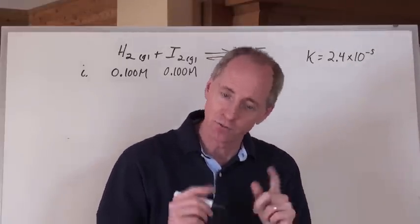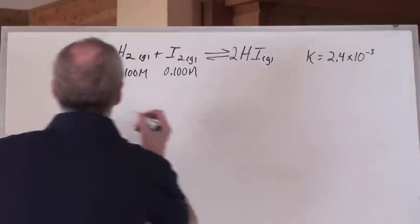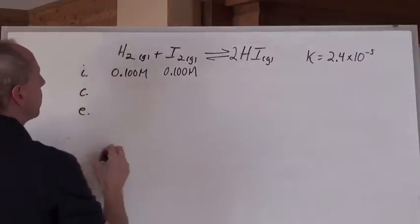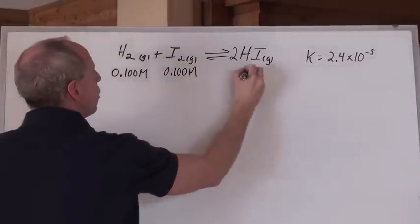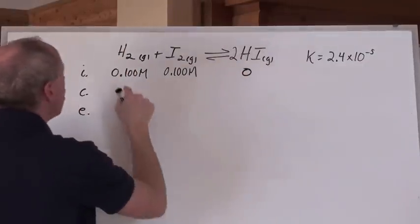Set up an ICE box first thing. So initial, change, equilibrium. Initially we have these two chemicals here present, and we don't have any of this right here.